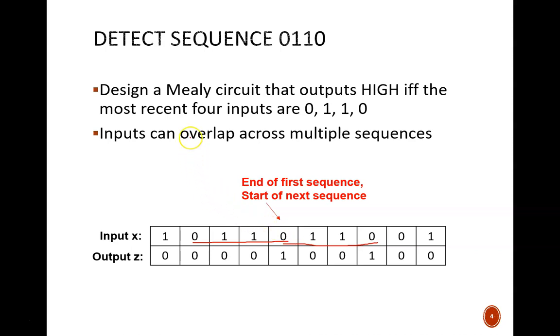This overlap is allowed only because of the second bullet point in the problem statement. If we change this word can to cannot, then the second sequence would not be valid. But, that is for a different design.